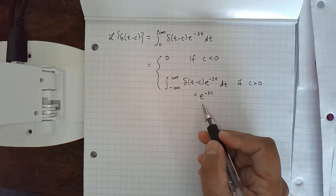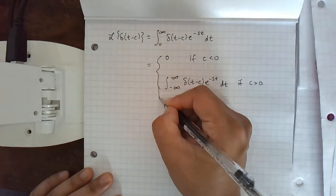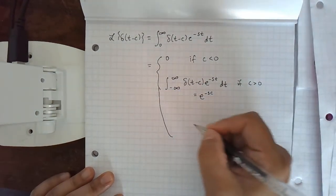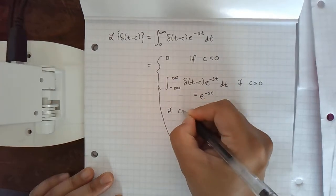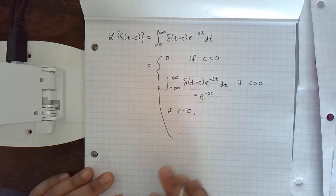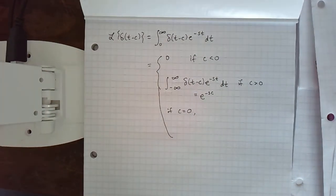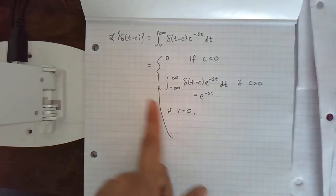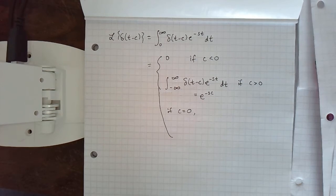Now what if c equals zero? If c equals zero, we have some ambiguity because we're starting the integral at zero. If we don't include the value zero, then this isn't useful to us - we're just going to get another zero.